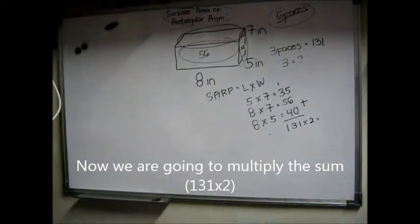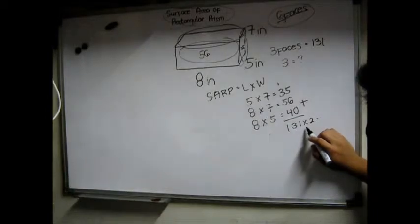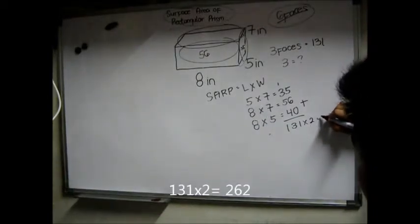We are going to multiply the sum by 2 because 3 times 2 equals 6. 131 times 2 equals 262.